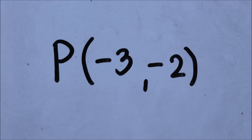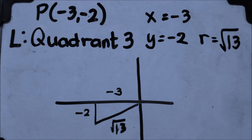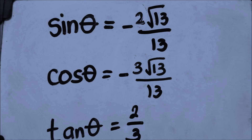It's time for a challenge. Find the 6 functions for the coordinate (negative 3, negative 2). So x equals negative 3 and y equals negative 2. Then r equals the square root of 13. According to the rule, when both x and y are negative, it is located in quadrant 3. And for this example, tangent and cotangent functions are positive. So sine theta equals negative 2 square root of 13 over 13. Cosine theta equals negative 3 square root of 13 over 13. And tangent theta equals 2 over 3, in positive sign.